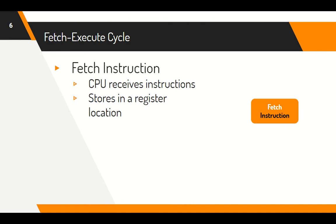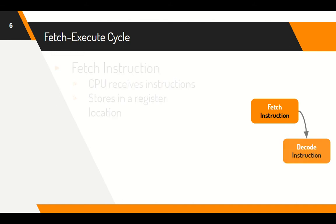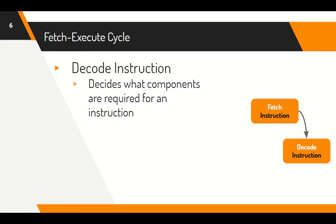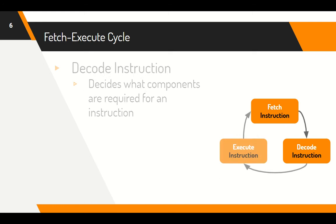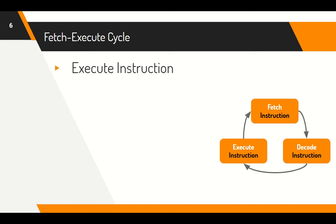The second part of the cycle is decode instruction, where the CPU determines which system components are required in the execution of the instruction. The last part of the cycle is execute instruction, where the CPU assigns the specific actions to the relevant system components to carry out the initial program instructions.